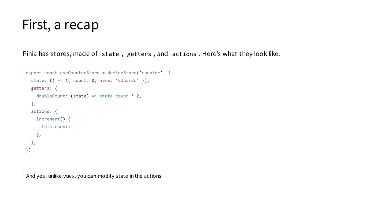So first of all, a recap of how Pinia works. Every store is identified with a unique ID. Stores can use the Composition API and the Options API, and a store is comprised of state, getters, and actions.